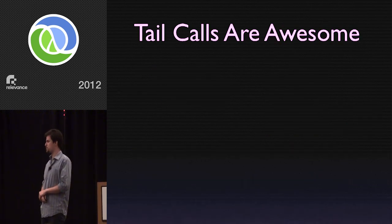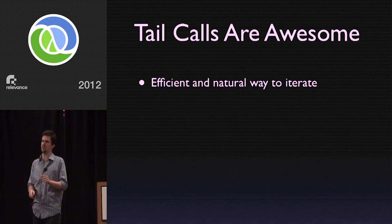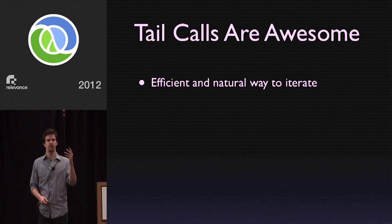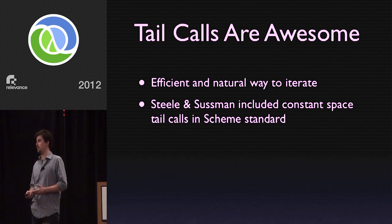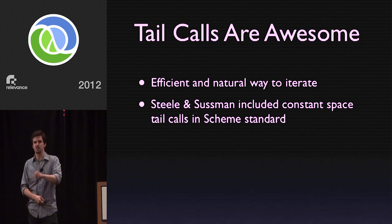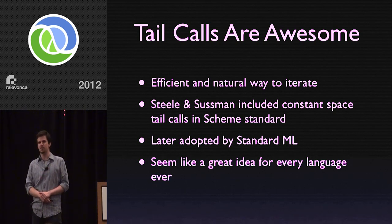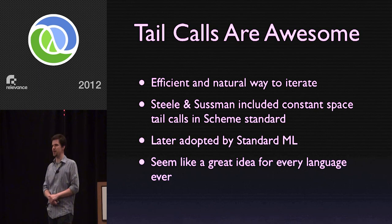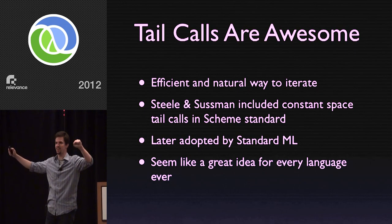It seems like most of the compiler writing community got the message, and procedure calls aren't painful anymore. Tail calls are super awesome — they're an efficient and natural way in languages with constant space tail calls to do iteration, recursion on lists, and all sorts of fun things. If you've ever written a finite state machine or a parser, you know that writing it in terms of natural recursion is great. It's so great that Guy Steele and Jerry Sussman put it into the Scheme standard: you're not a proper Scheme implementation unless you have constant space tail calls. The Standard ML guys came along a little bit later and agreed. So we're still in 1977 and it looks great — everybody in the future is going to have constant space tail calls, right?